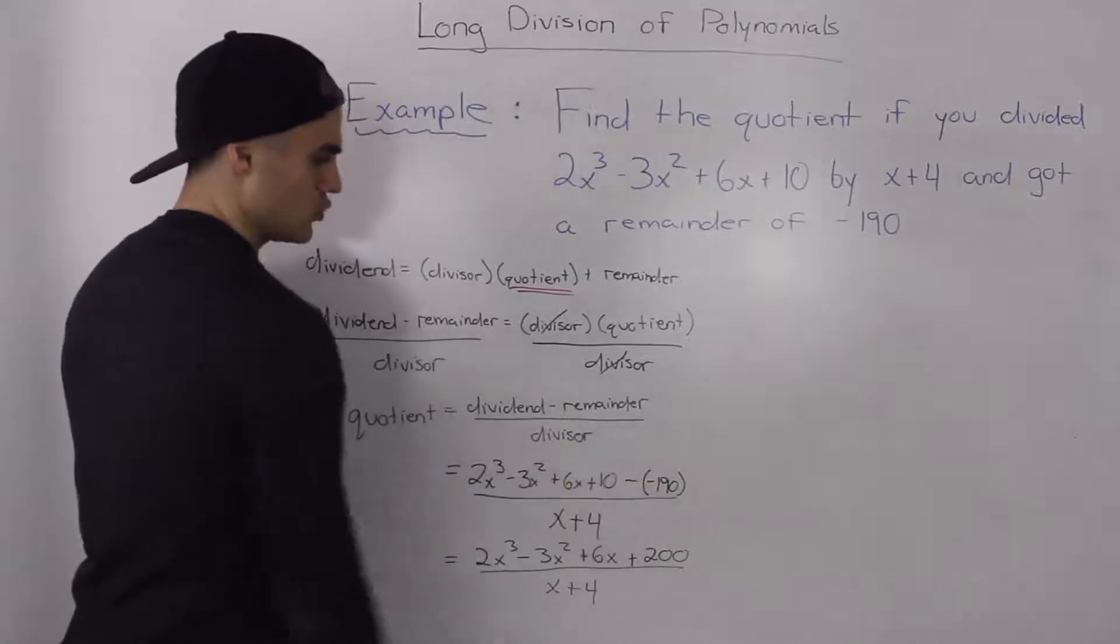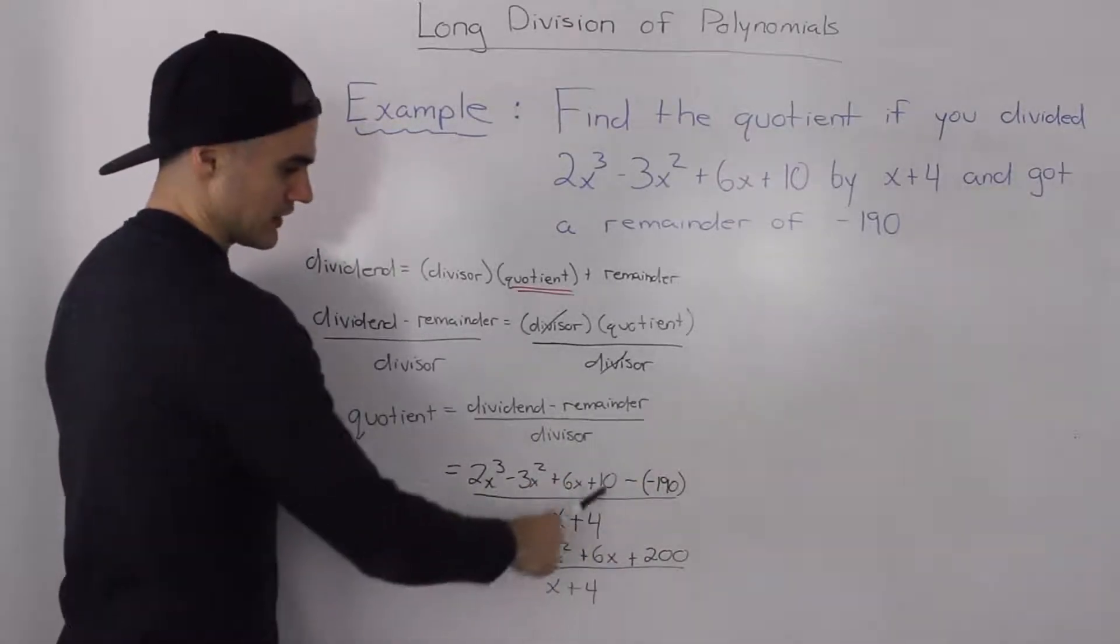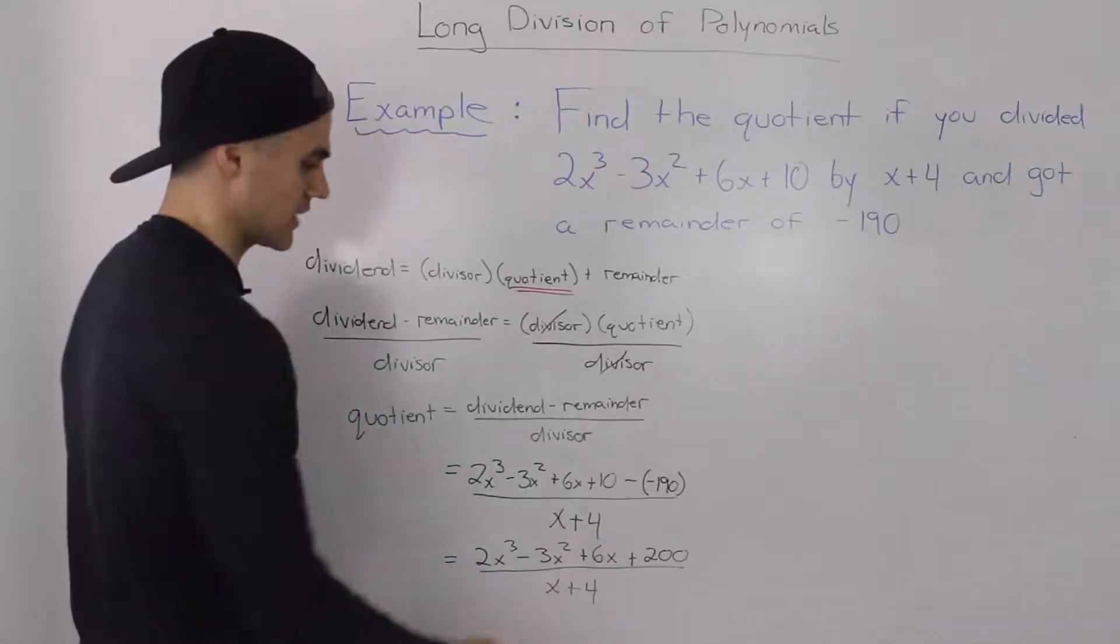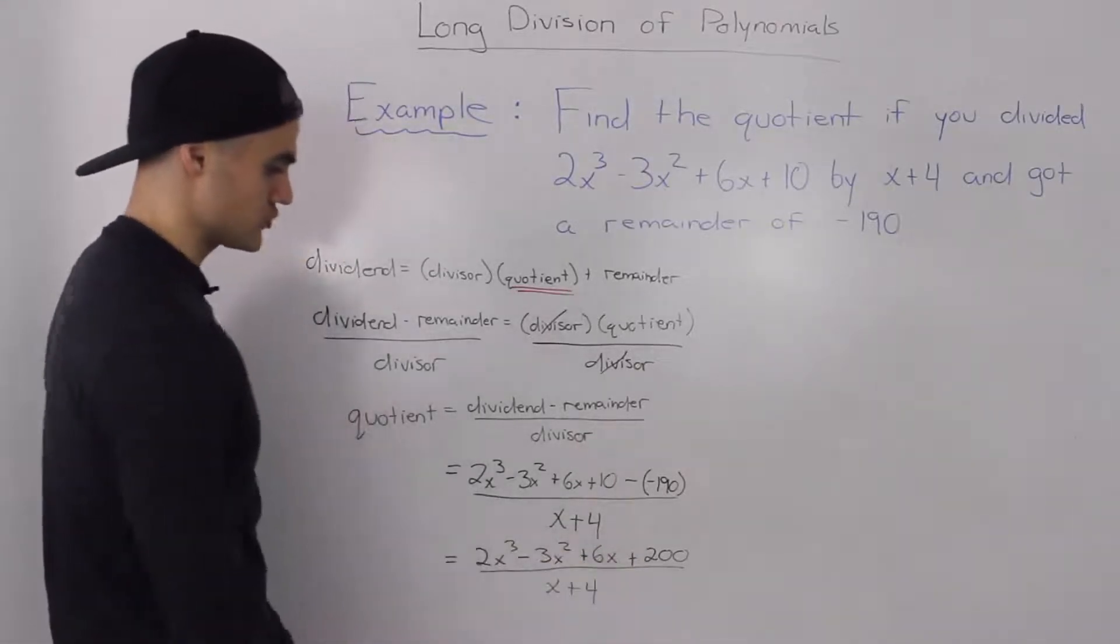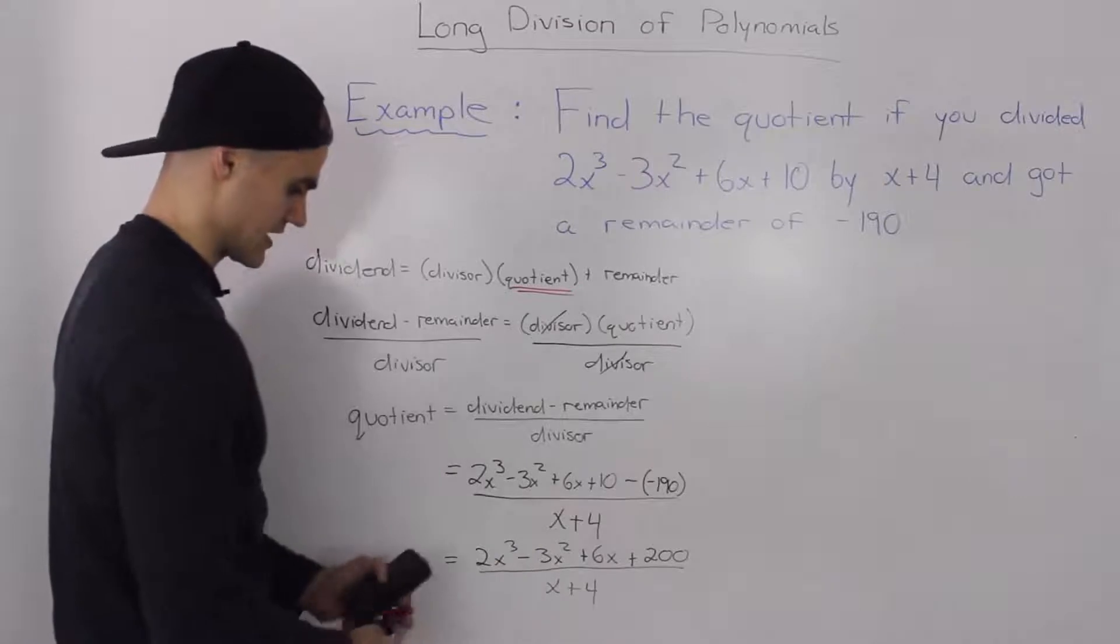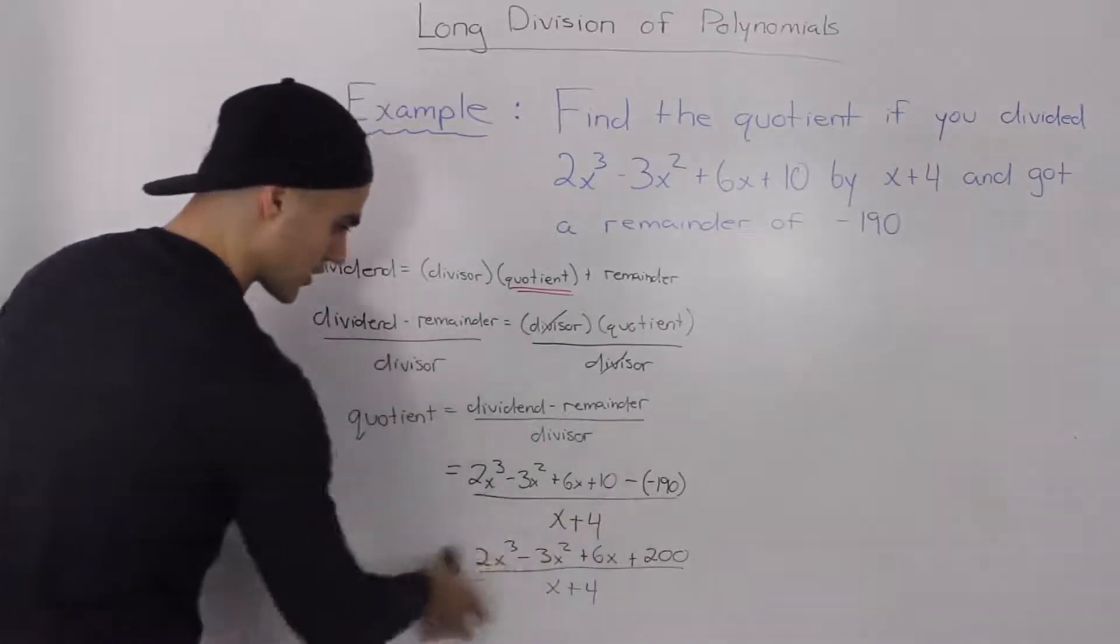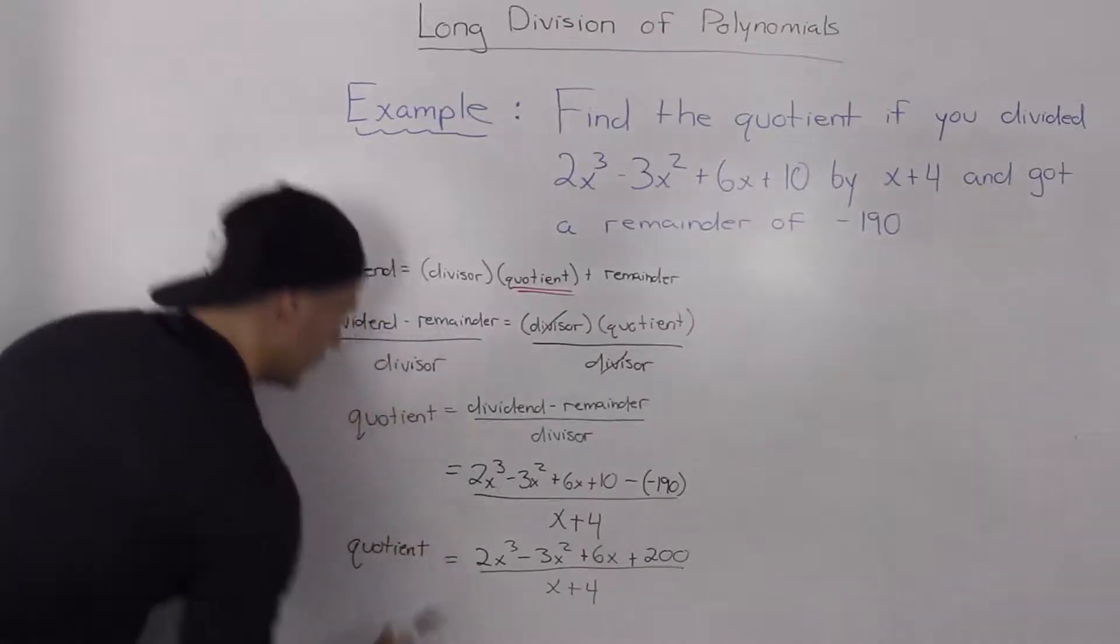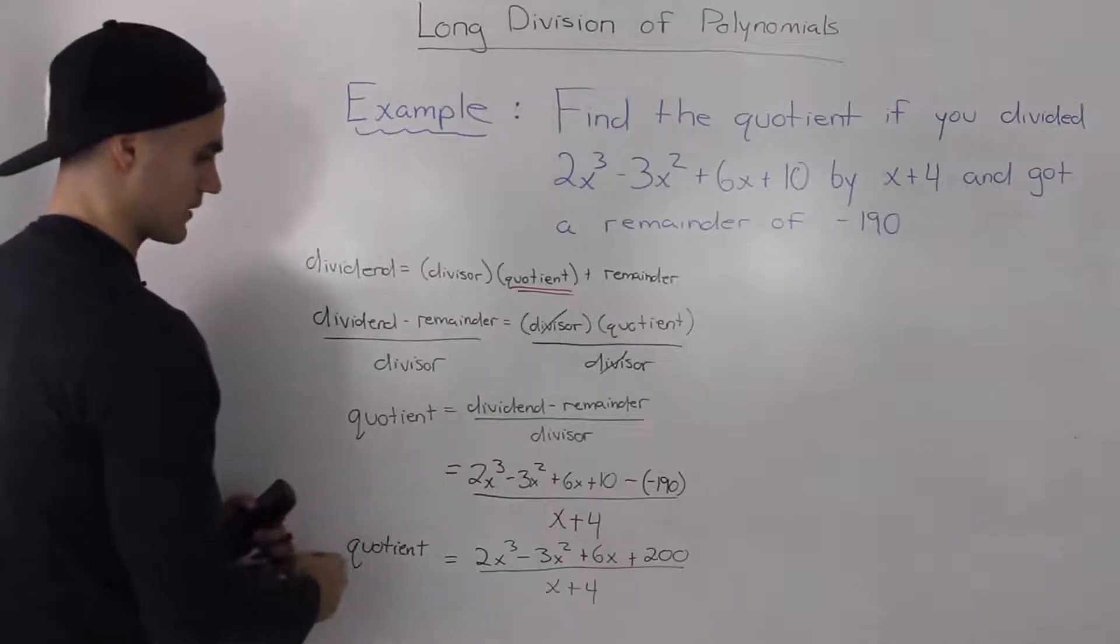Then taking the numerator and simplifying it, so 10 minus negative 190 is the same as 10 plus 190 and we end up with 200. Everything else stays the same. So this part here, this new expression here, is our quotient which is what we are trying to find.